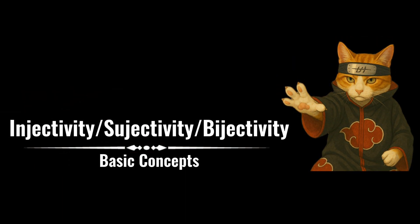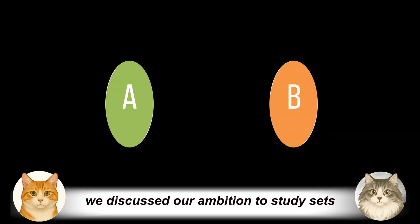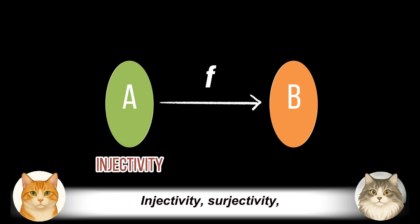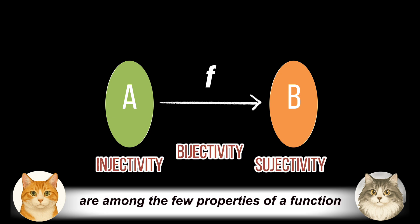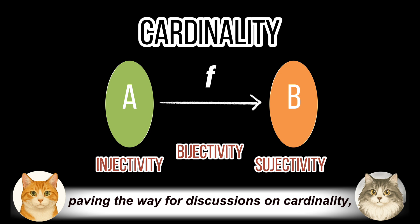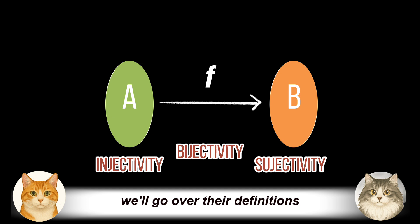Previously, we discussed our ambition to study sets via properties of functions between them. Injectivity, surjectivity, and bijectivity are among the few properties of a function that don't require any extra structure on the sets, paving the way for discussions on cardinality, and are thus natural candidates to begin with. In this section, we'll go over their definitions and look at some examples.